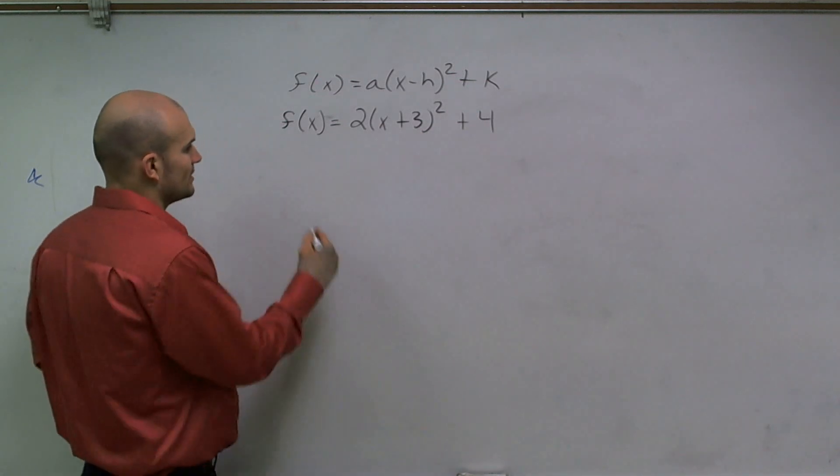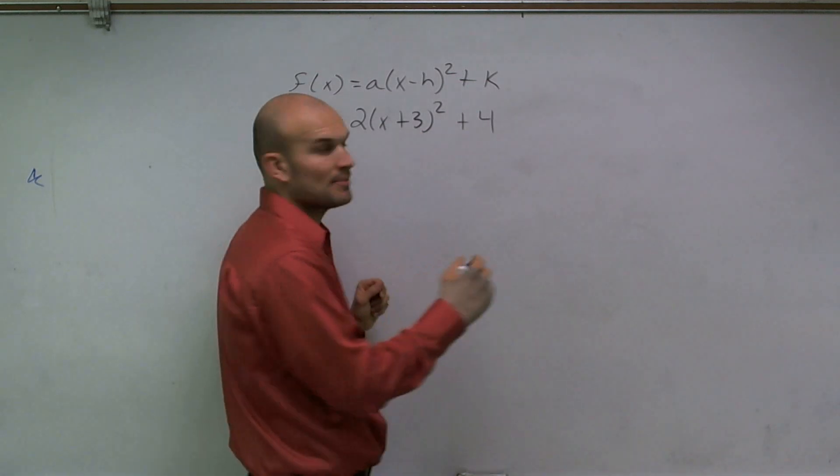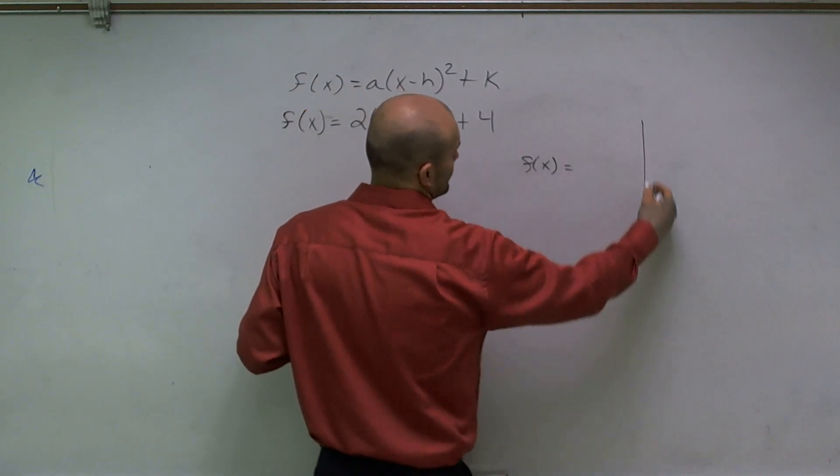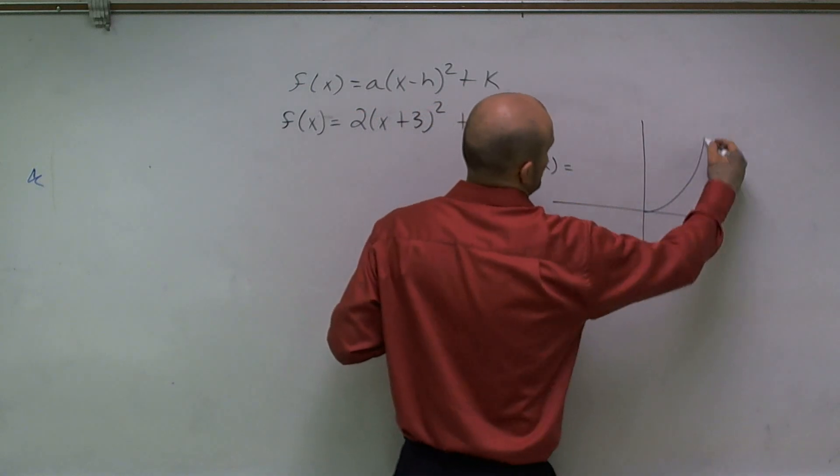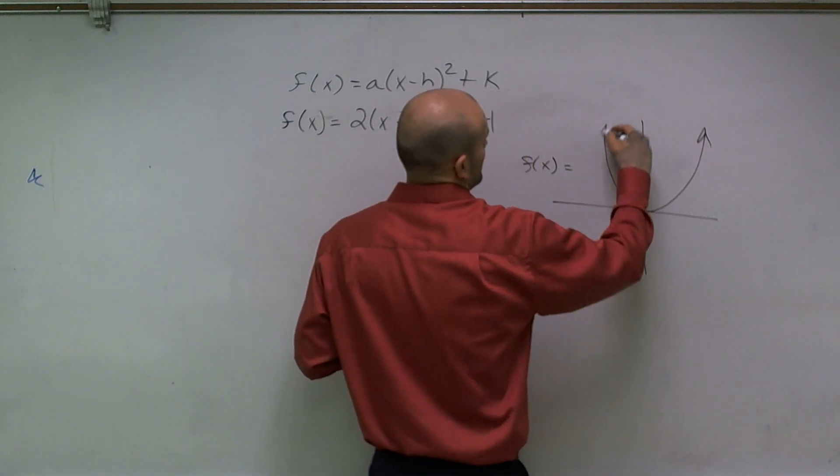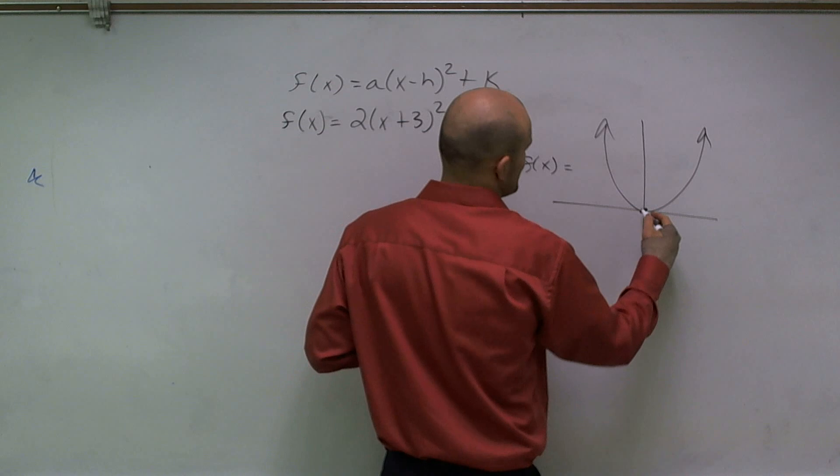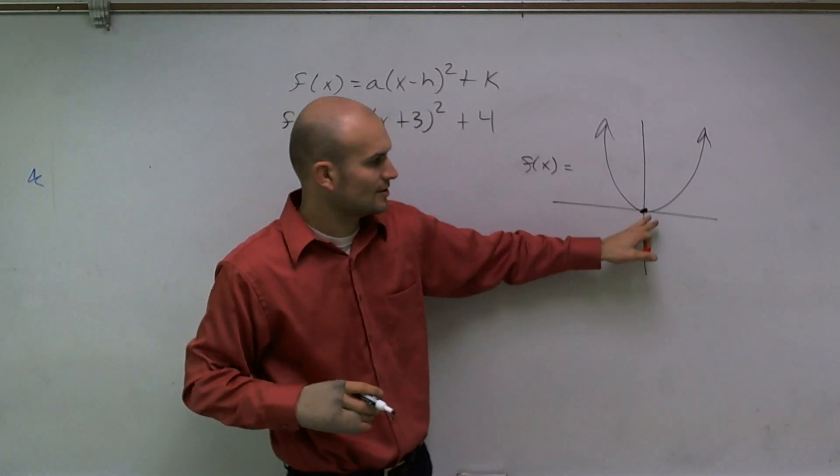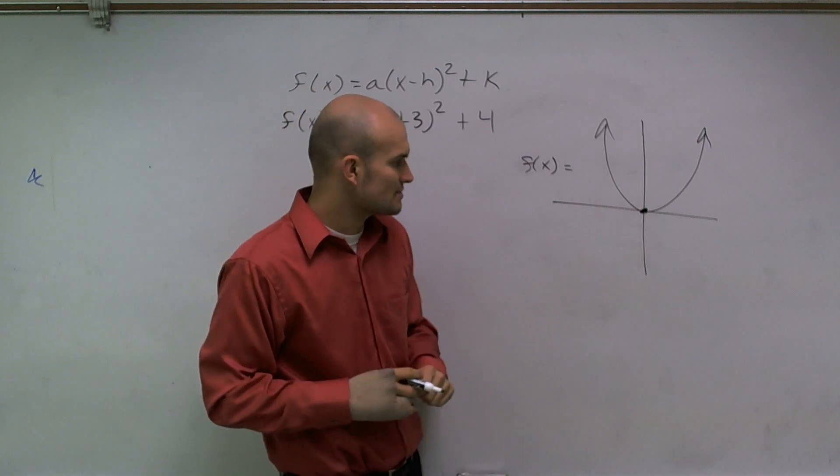So when looking at a general parabola, if I have f of x, the general graph of a parabola looks something like this. Where, when we say the vertex, either the lowest point or the highest point—in this case the lowest point of my parabola—is at 0, 0.